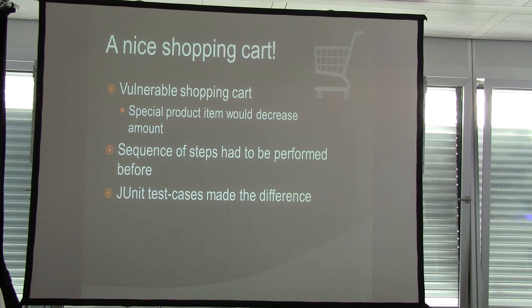These are examples where I found the extension useful — for finding bugs that are really difficult to discover. A shopping cart bug: there was a special hidden product with an ID you had to guess — if it was in the shopping cart, it would decrease the total amount, but only if another item was also present, requiring many requests to set up. A very difficult scenario, and again JUnit test cases helped speed things up, letting me focus more on the attack rather than constructing the prerequisite scenario.